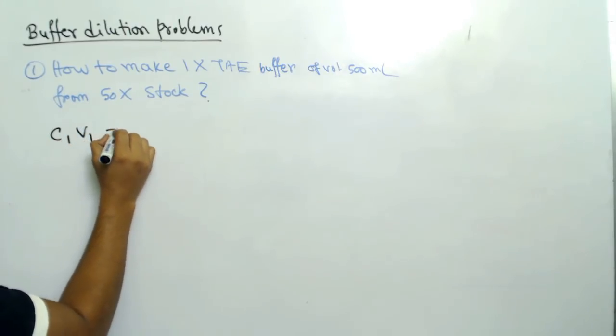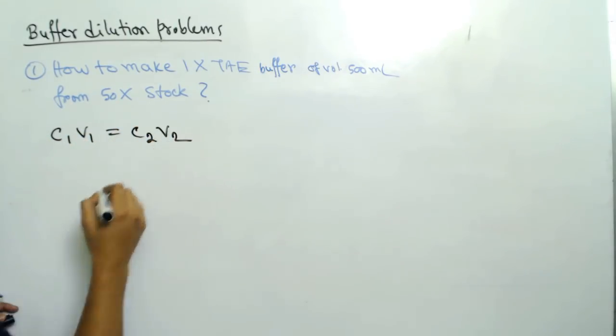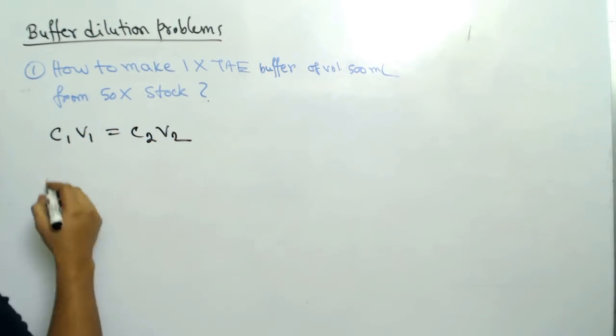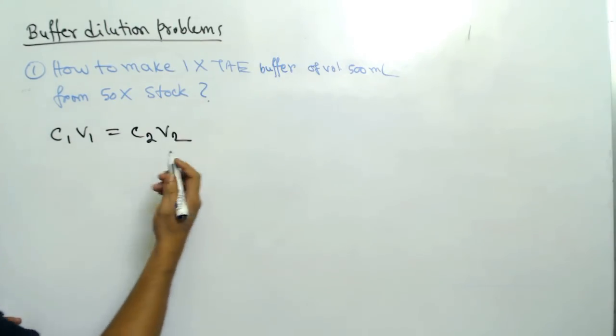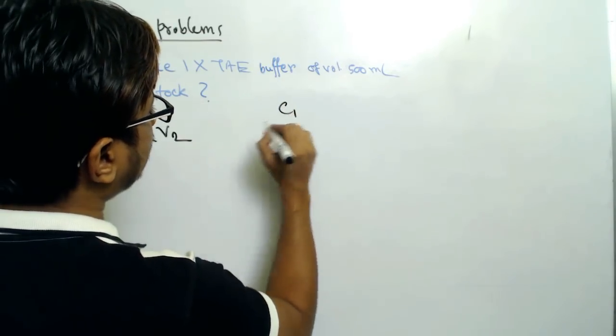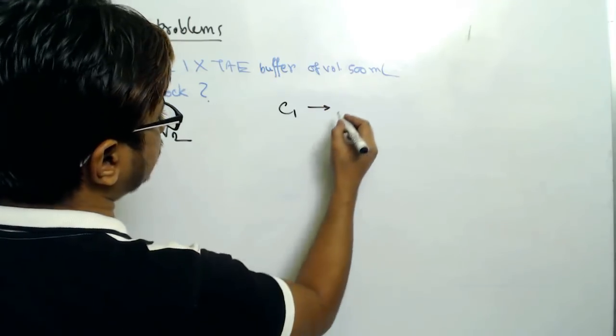For this type of calculation, what you need to know is C1V1 equals C2V2. This is the formula that we utilize. C means concentration and V means volume.